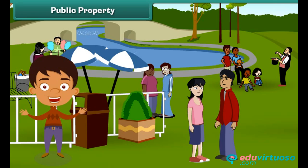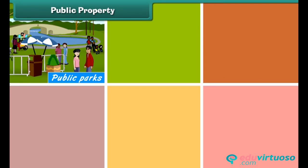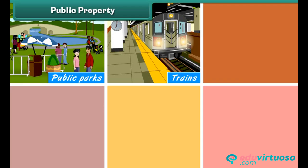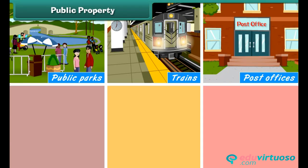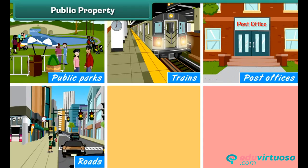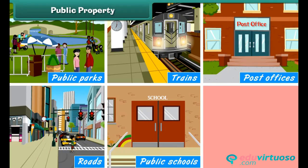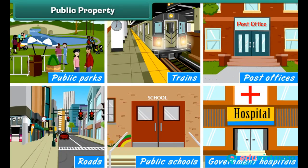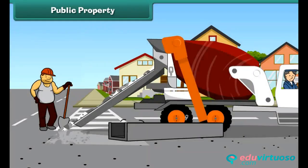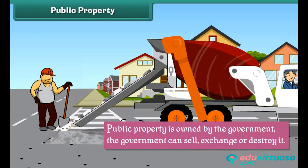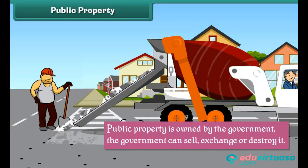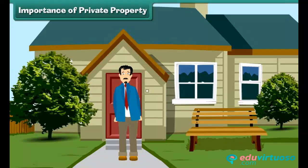All people of the country have equal right to use it. Public parks, trains, post offices, roads, public schools, public colleges, and government hospitals are all public properties. Since public property is owned by the government, the government can sell, exchange, or destroy it.